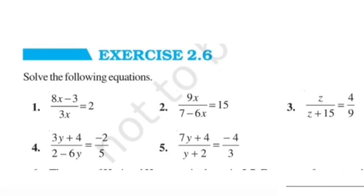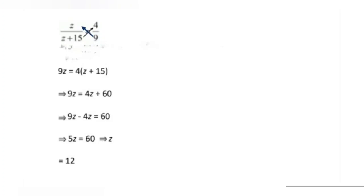Question number 3: z upon (z plus 15) is equal to 4 upon 9. By cross multiplication: 9 into z equals 4 into (z plus 15). So 9z equals 4z plus 60. Writing variables separately: 9z minus 4z is 5z equals 60. Therefore z is equal to 60 upon 5, so z is equal to 12.